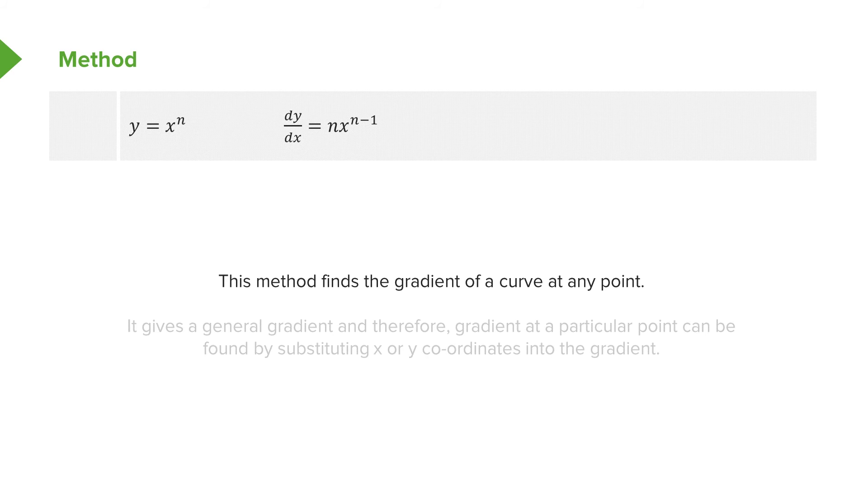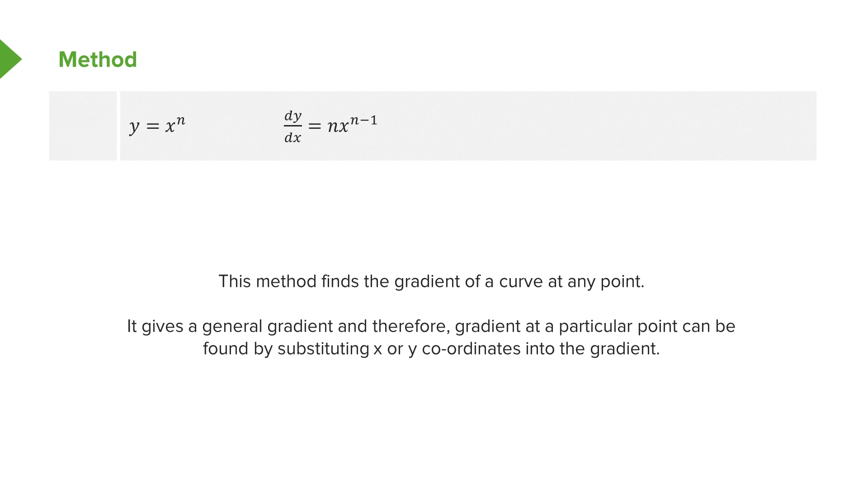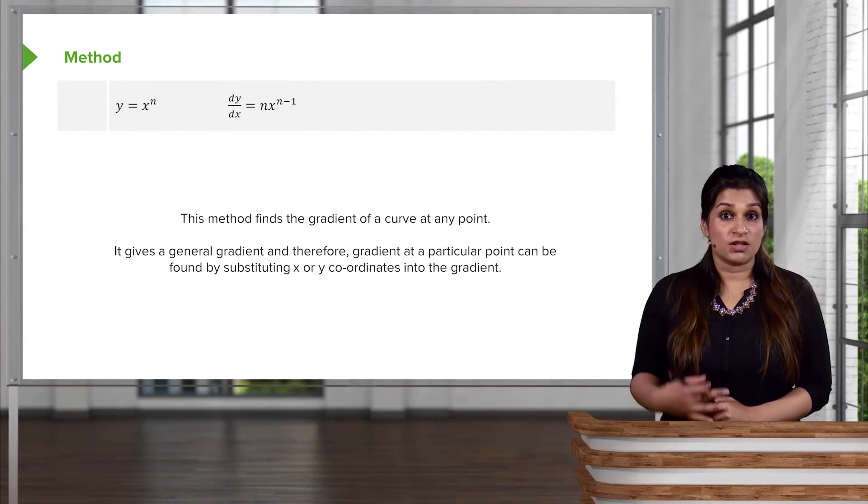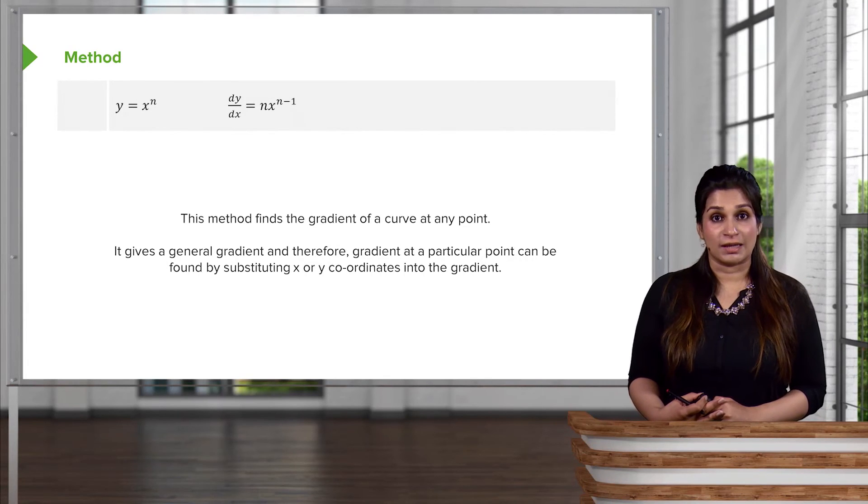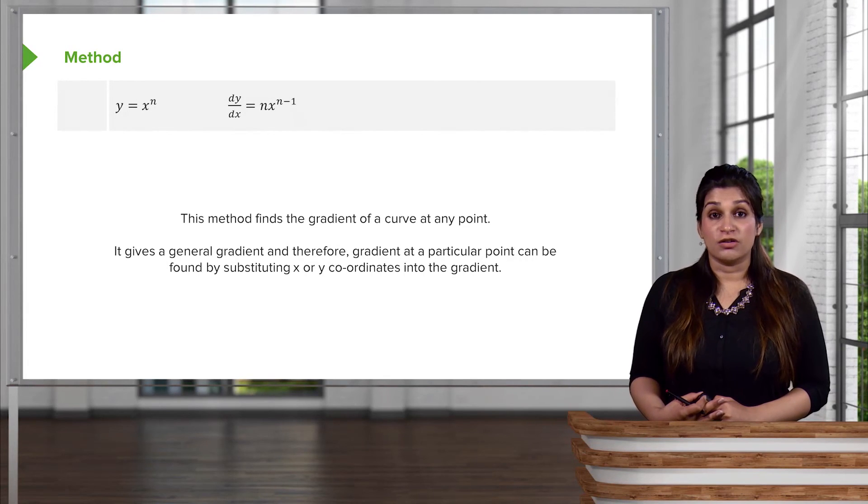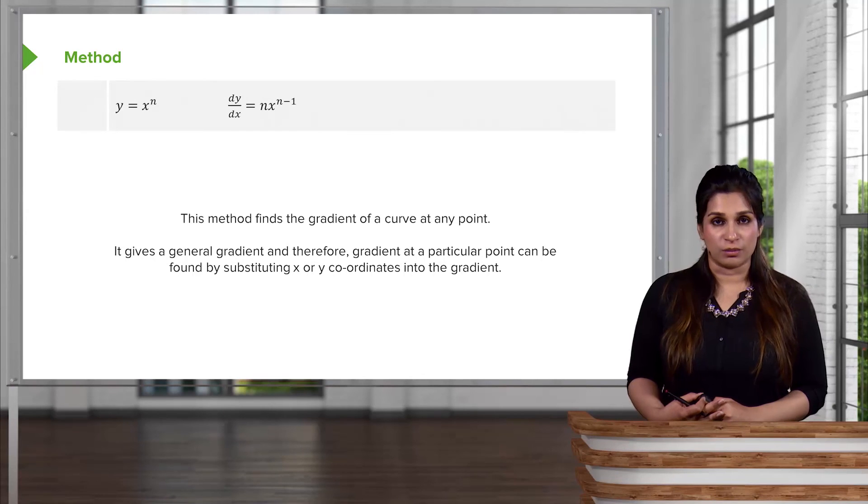Now this finds the gradient of a curve at a point. So we have discussed previously that it would give you a general gradient, and then you can find a particular gradient by just substituting your x or y values in. And we've seen us do this in the past few examples where we're differentiating implicitly or we're finding gradients of tangents or gradients of normals.